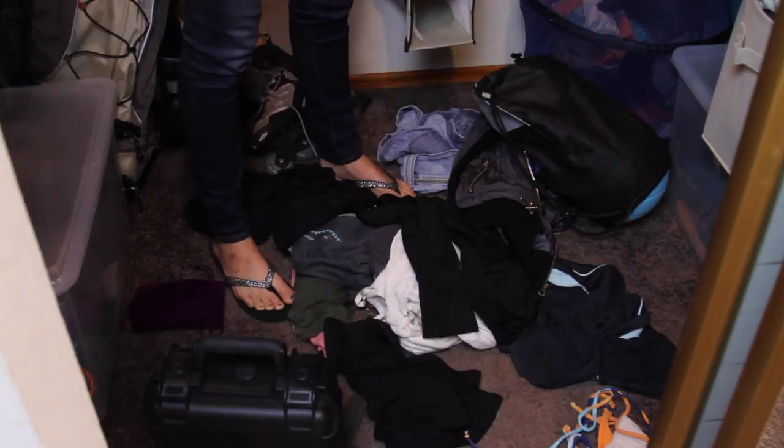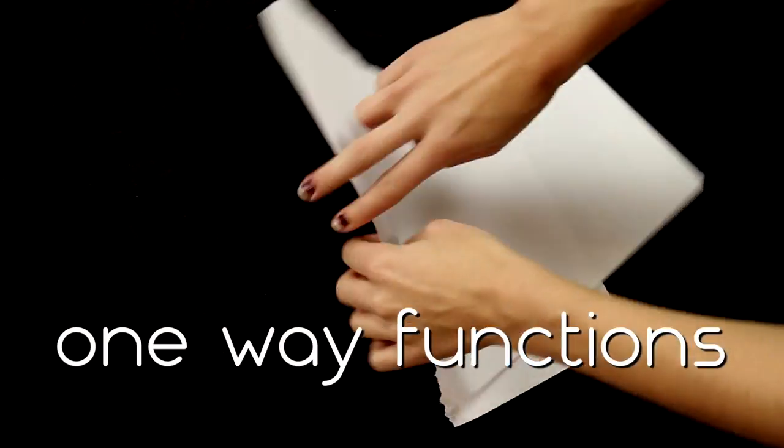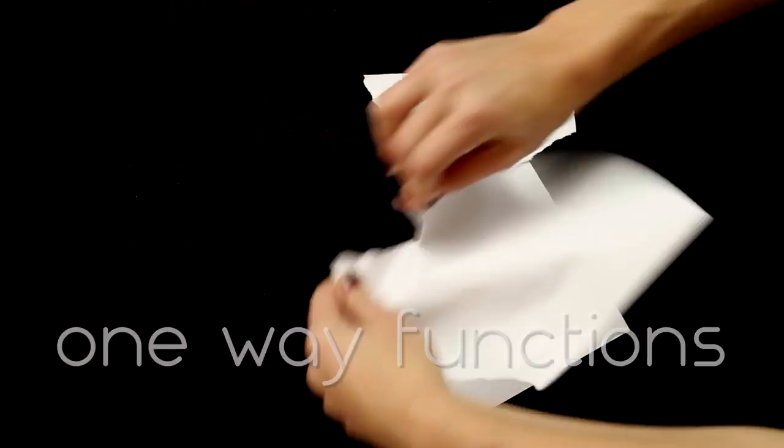So cryptographers turned to math to develop harder codes. They thought a good code should be easy to create but difficult to decode, like a mess. In math terms, they sought processes called one-way functions: easy to compute one way but hard in reverse.